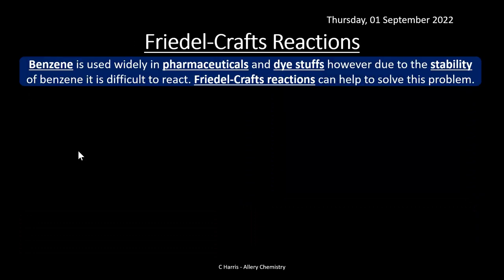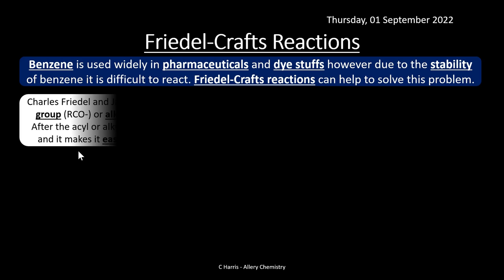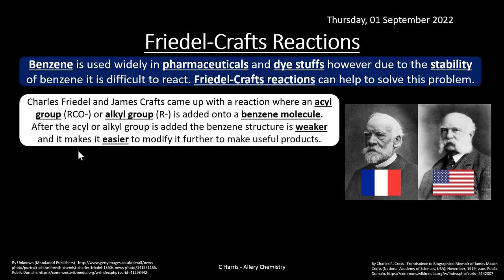Let's look at Friedel-Crafts reactions. Benzene is used widely in pharmaceuticals and dyestuffs, but because benzene is really stable, it's difficult to react. Friedel-Crafts reactions can help solve this problem. James Friedel and James Crafts — French and American chemists — came up with a reaction where an acyl group (RCO) or an alkyl group (R) is added to a benzene molecule. After the acyl or alkyl group is added, the benzene structure is weaker and this makes it easier to modify further. A halogen carrier such as AlCl3 must be used to create a strongly positive electrophile, since acyl or alkyl groups alone are not positive enough.